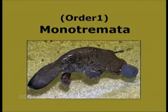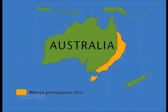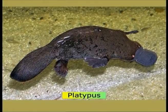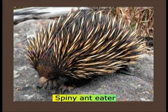Order 1: Monotremata. Monos meaning single, Trema meaning opening — animals having a single opening. They have only one cloacal opening present. They are confined to the Australian continent only. Examples of Monotremes are platypus or duckbill, and spiny anteater.